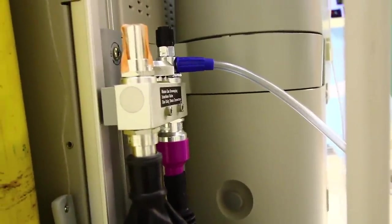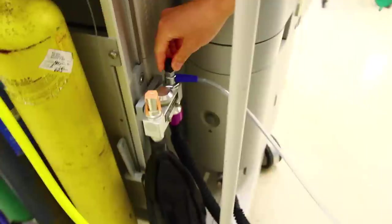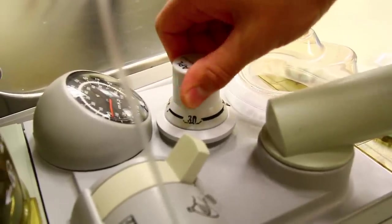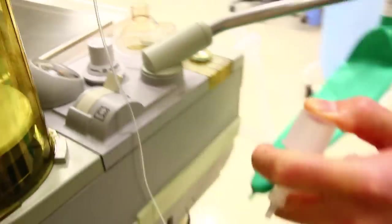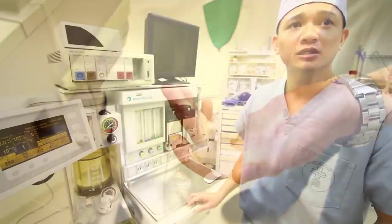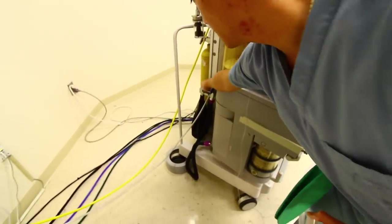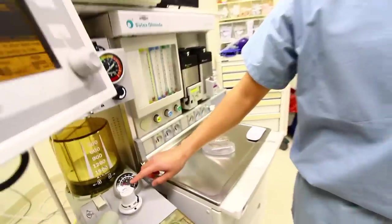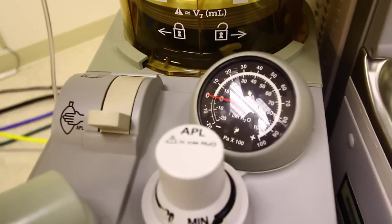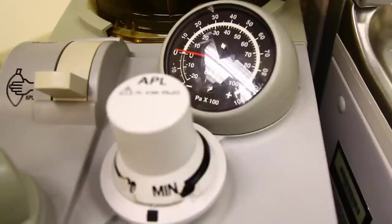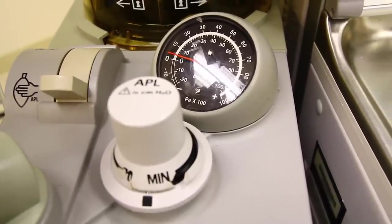Now check and adjust the scavenging system. Ensure proper connections and adjust the waste gas vacuum. Turning the knob counterclockwise increases the suction and vice versa. Now fully open the APL or pop-off valve. Then occlude the Y piece. With minimum oxygen flow, allow the scavenger reservoir bag to collapse completely. Note on your pressure gauge that it doesn't drop below zero. Activating the oxygen flush valve and occluding the end of the Y piece, ensure that the pressure does not rise above 10.